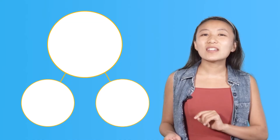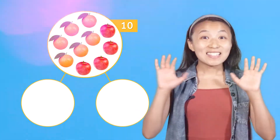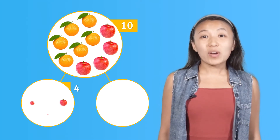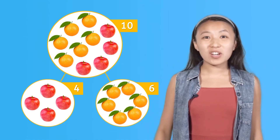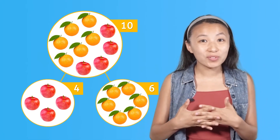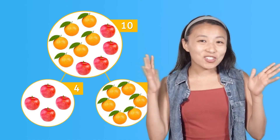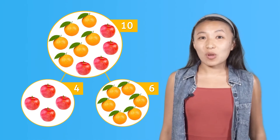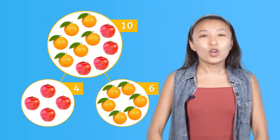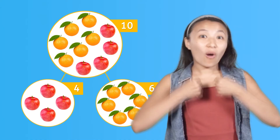Let's look at another way of showing the part-part-whole connection between the apples and oranges and the whole group. This is called a number bond. It shows us how a whole is made up of the smaller parts inside of it. Remember what our whole was? 10! There were 10 apples and oranges in all. That whole was made of two parts. One of the parts was four apples. The other part was six oranges. This number bond is a way of showing how those two parts come together to make the whole. Hold up your hands with me — a number bond shows how a part and a part work together to make a whole. We can shorten this down to: part, part, whole.